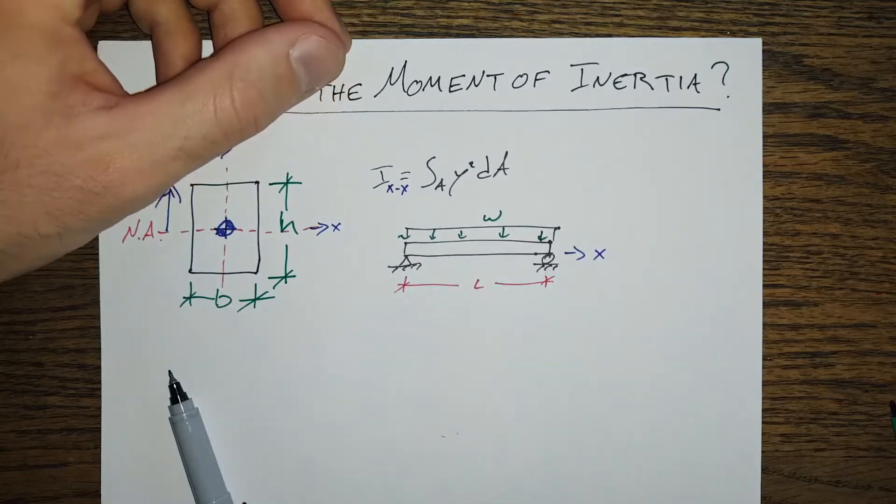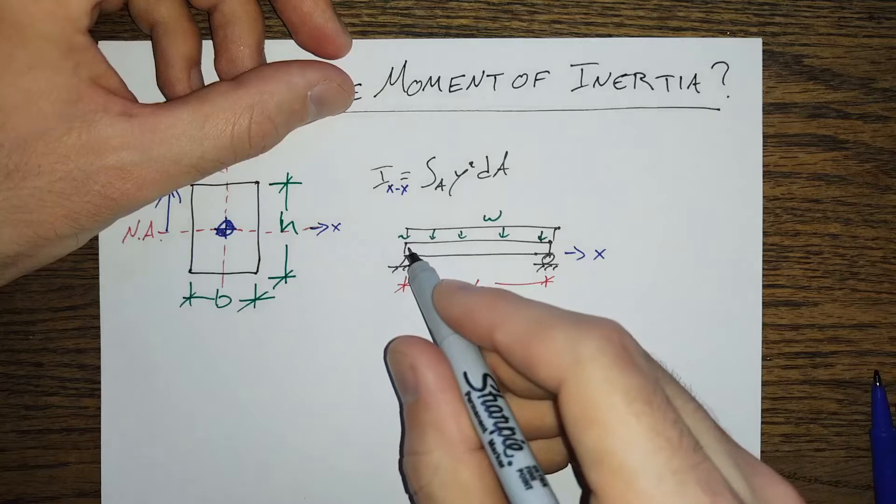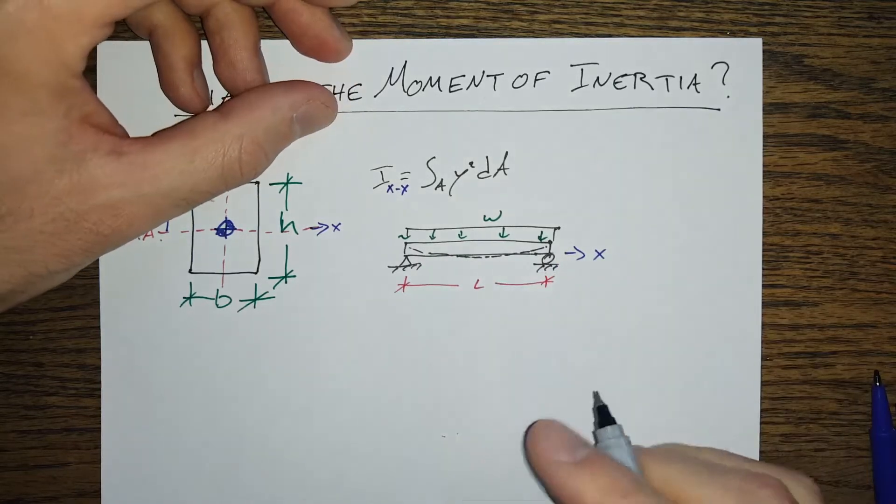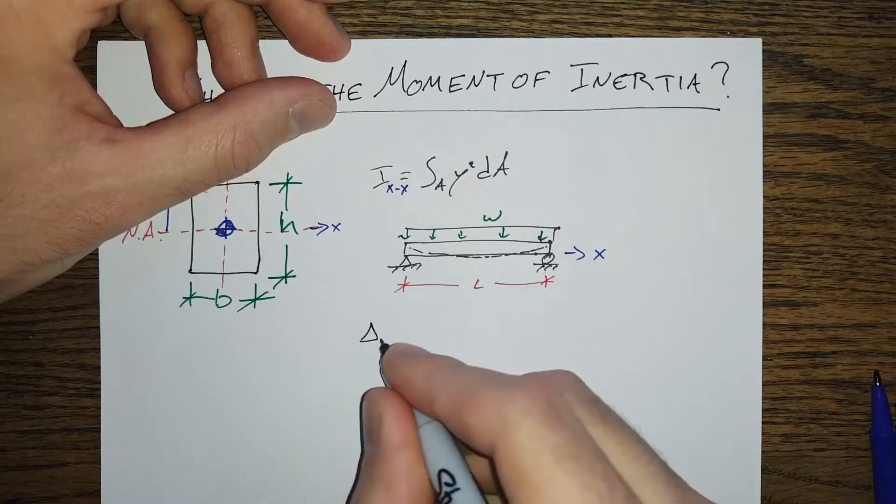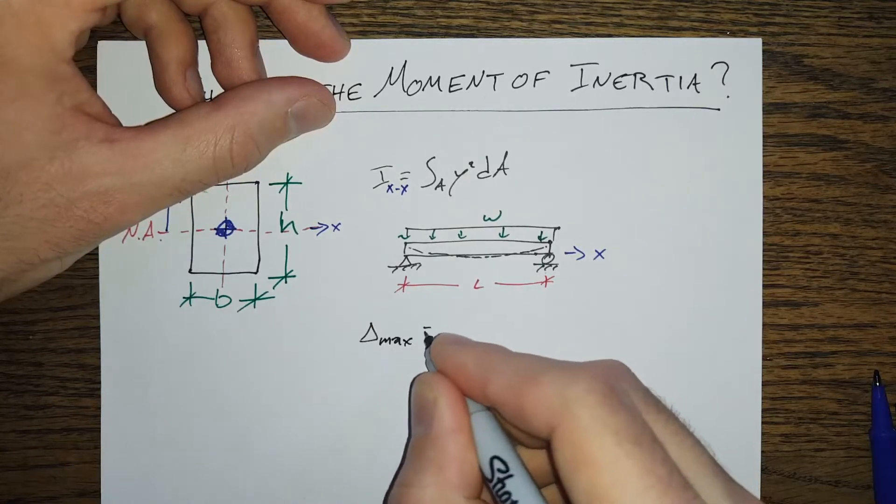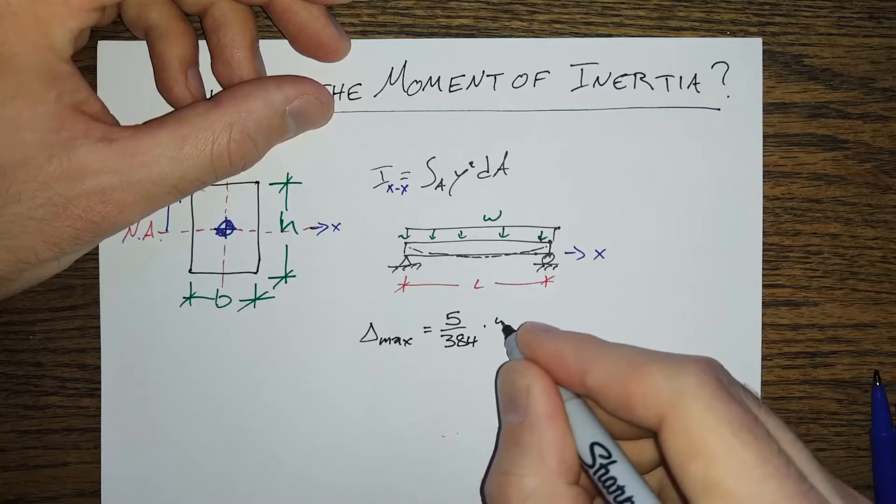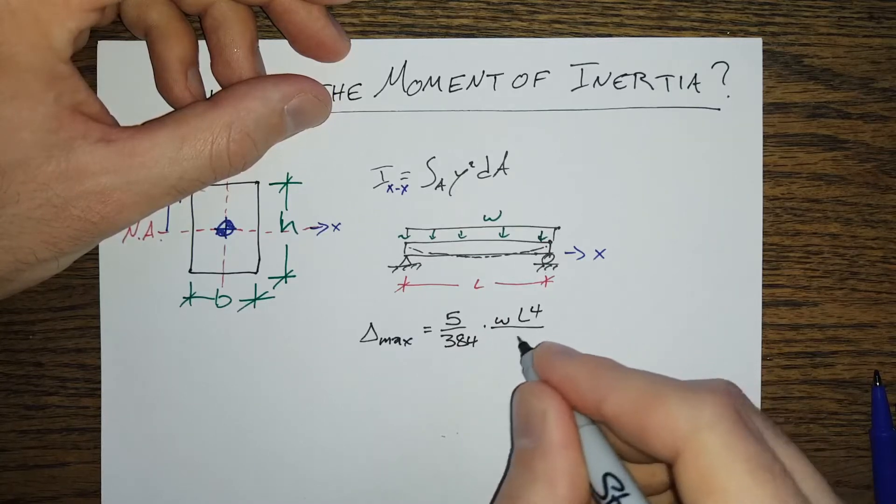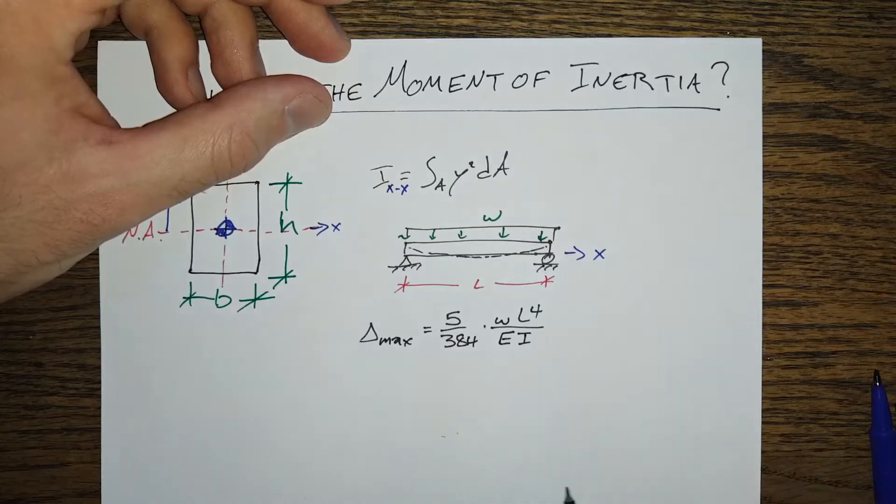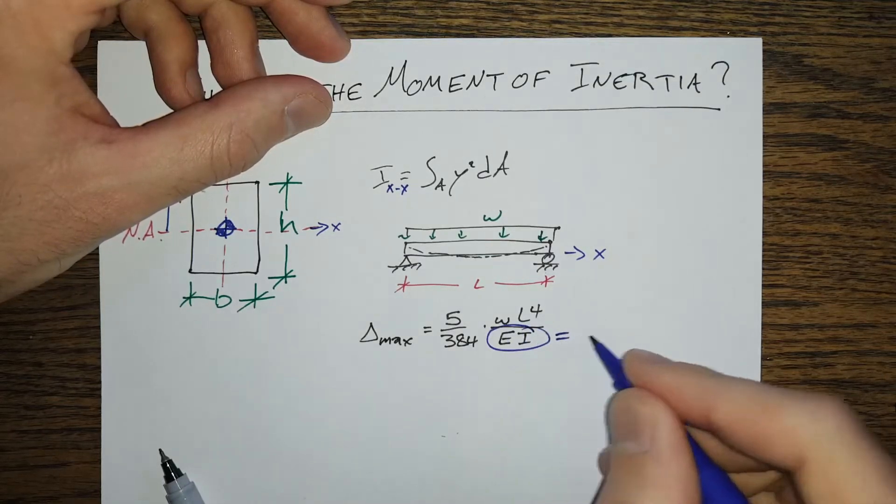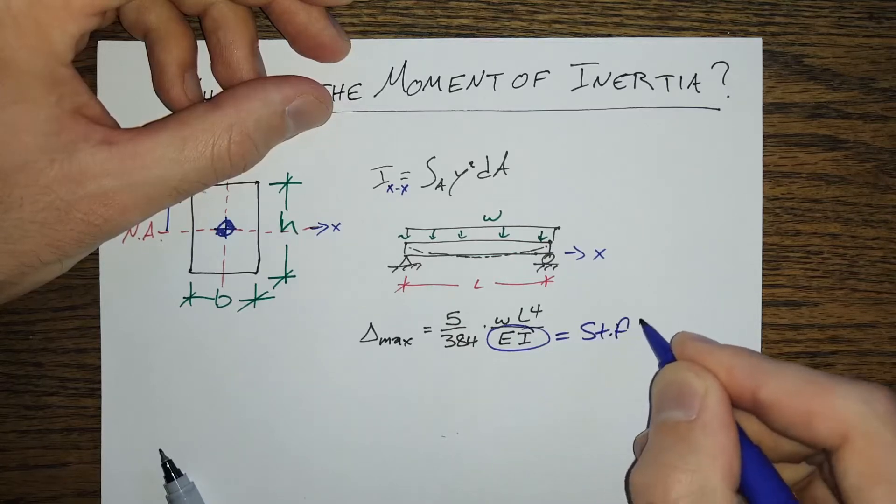We've got just about everything we need to tell what the maximum deflection is going to be. This thing is going to sag in the middle, and this maximum deflection delta max is equal to 5 over 384 w L to the fourth power over EI.